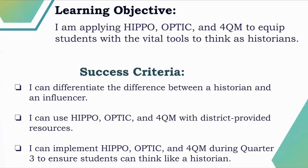Our objective for today: I am applying HIPPO, OPTIC, and 4QM to equip students with the vital tools to think as historians. I will know I've met that goal by meeting three success criteria: I can differentiate the difference between a historian and an influencer; I can use HIPPO, OPTIC, and 4QM with district-provided resources; and I can implement HIPPO, OPTIC, and 4QM during Quarter Three to ensure students can think like a historian.